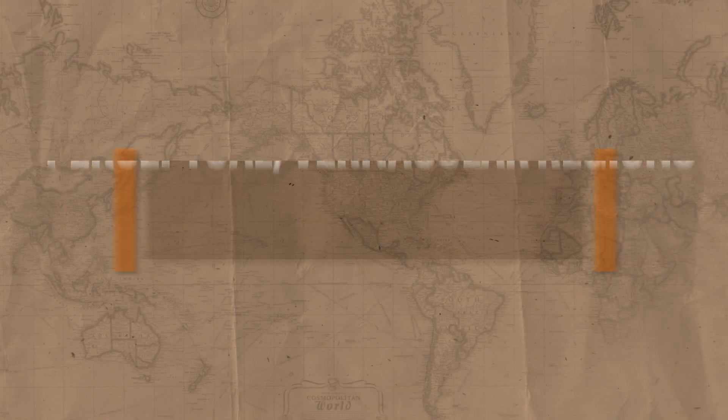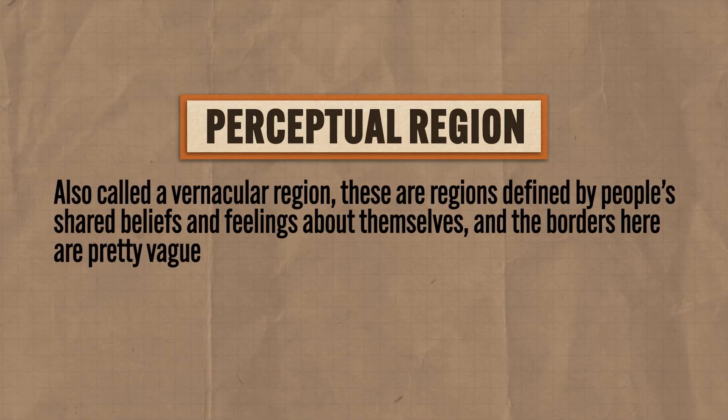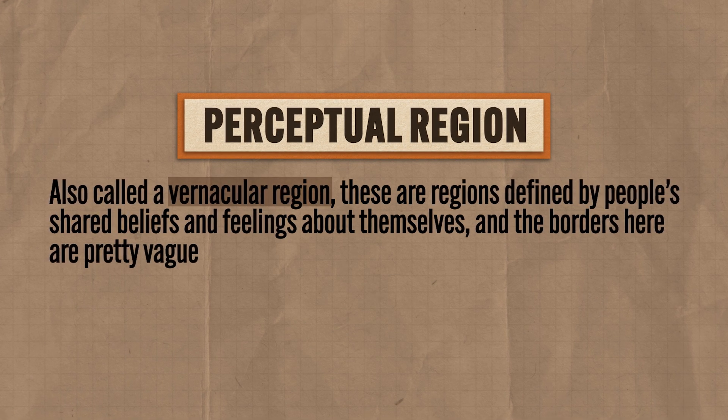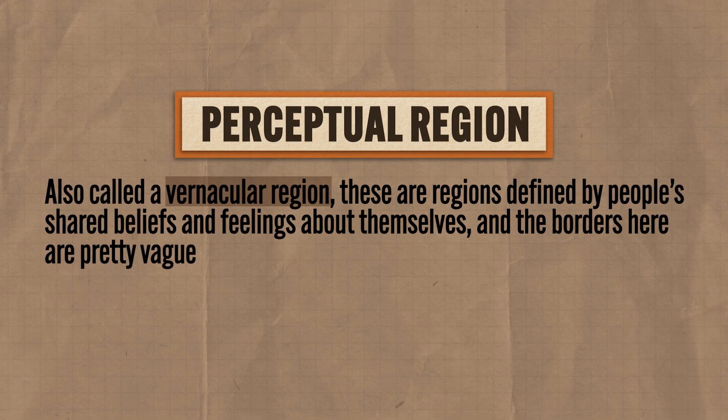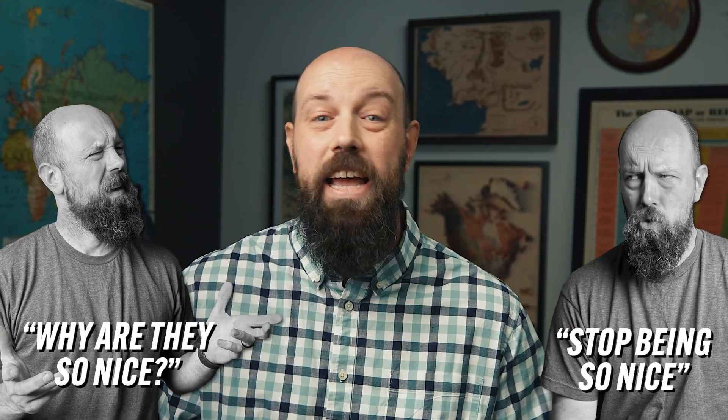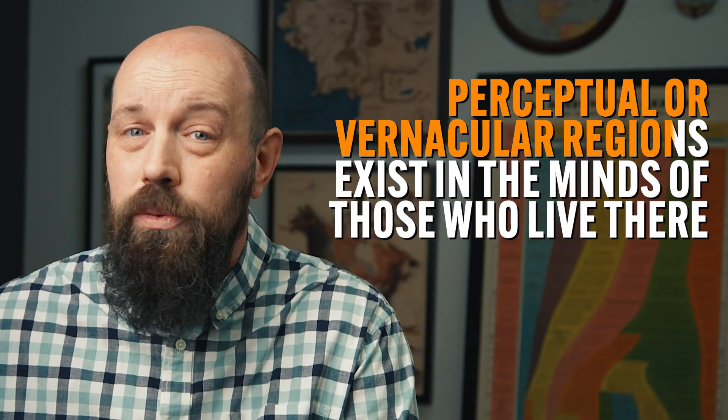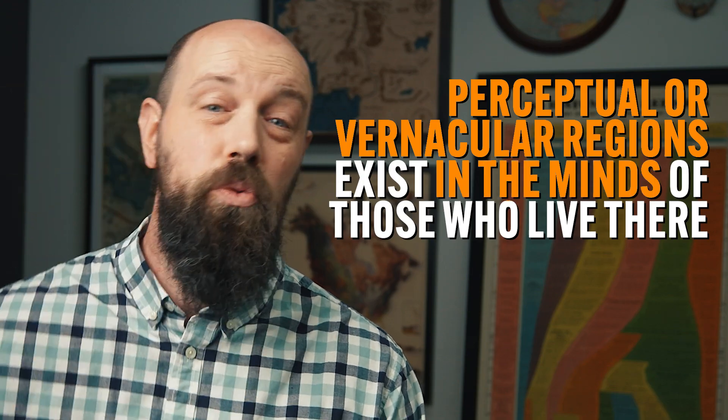The third kind of region you need to know is called a perceptual region, or you might hear it called a vernacular region. These are regions defined by people's shared beliefs and feelings about themselves, and the borders here are pretty vague. Like Southerners tend to think of themselves as hospitable and more religious than folks in other regions like the Northeast. If someone from Boston moves to North Alabama, they might be shocked to find people holding doors open for them or complete strangers asking how their day was. Perceptual or vernacular regions exist in the minds of those who live there, which means it's often impossible to draw a hard line where one ends and another begins.